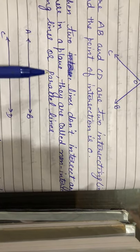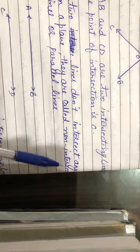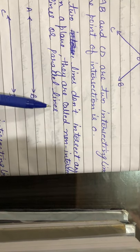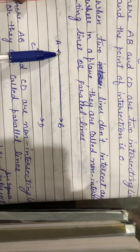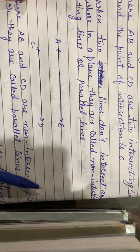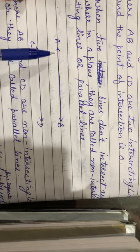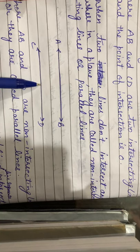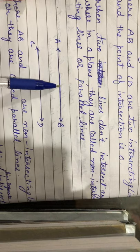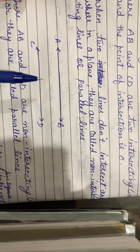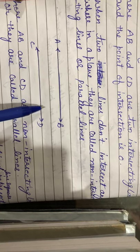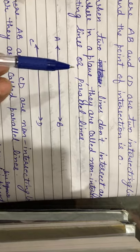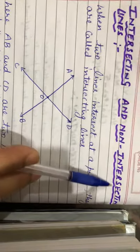When two lines do not intersect anywhere in a plane they are called non-intersecting lines or parallel lines. Here AB and CD, if extended in any direction, will not meet anywhere. They are also called parallel lines, and the distance between parallel lines is always uniform.